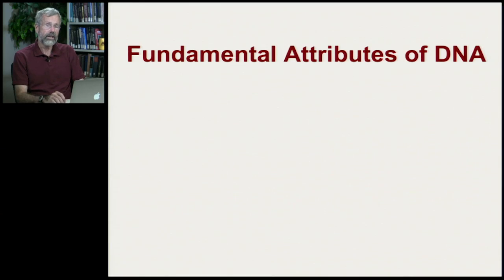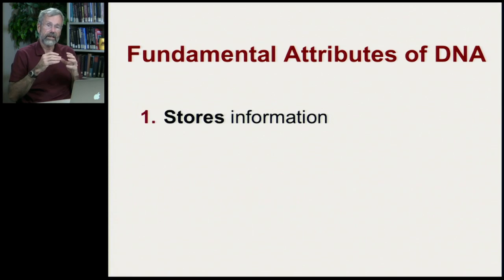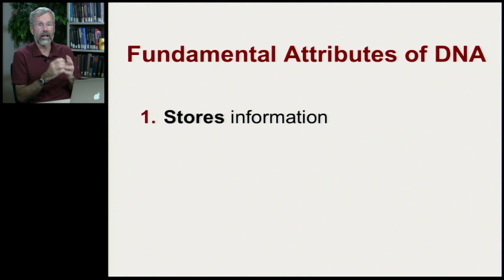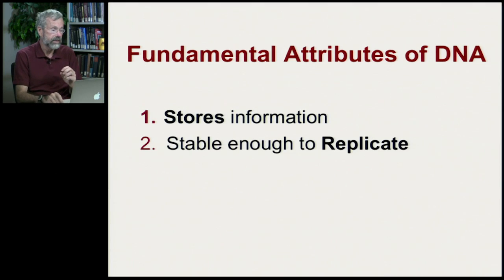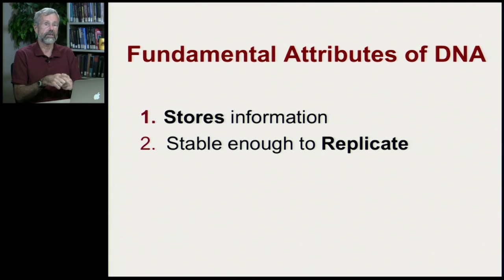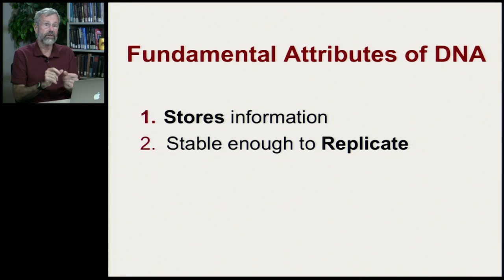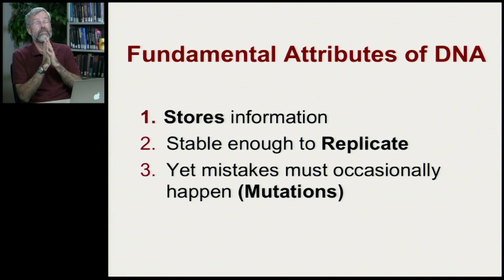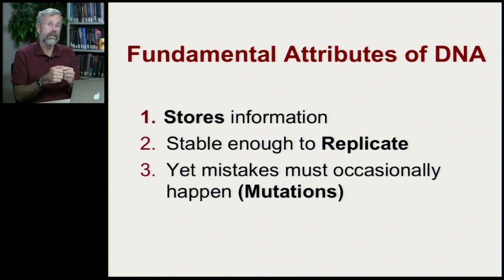Today we're going to look at various aspects of cellular biology, but the first thing I want to focus on is mutations. There are several fundamental attributes of DNA. First, that's where all the information that ultimately ends up as proteins is stored — this is kind of the library, the blueprints for our bodies. Secondly, DNA is stable enough to allow for replication, so you can get two descendant double-stranded molecules essentially identical to the first. But mistakes do occasionally happen — in fact, they actually should happen. And these are mutations.